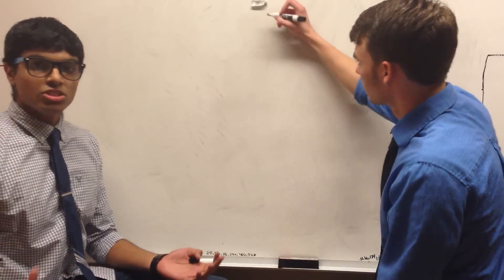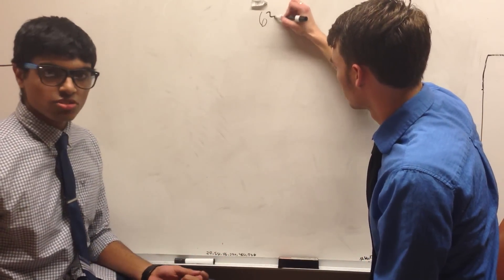First up, multiplication. What you want to do is take two numbers, let's say 63 and 31.